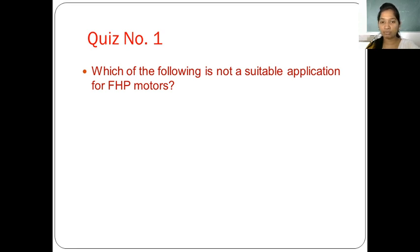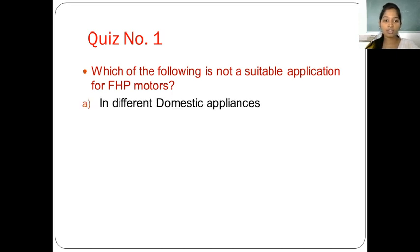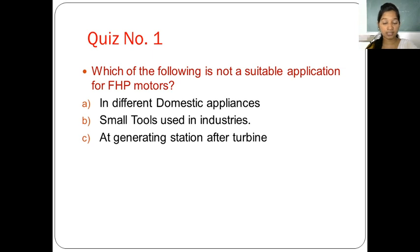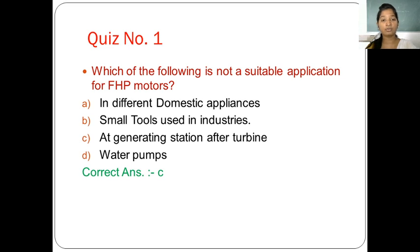Quiz number one: which of the following is not a suitable application for fractional horsepower motors? The options are: first, different domestic appliances; second, small tools used in industries; third, at generating stations after turbine; and fourth, water pumps. The correct answer is option three — at generating stations after turbine — because there we do not use fractional horsepower motors.